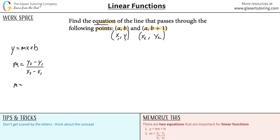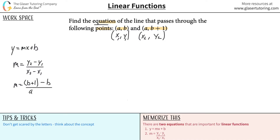Let's plug in the values. The slope equals y₂ minus y₁, all over x₂ minus x₁. So y₂ is (b + 1), minus y₁ which is b, all divided by x₂ which is a, minus x₁ which is also a. So we have (b + 1 - b) / (a - a).